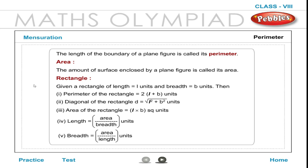For a rectangle with length L units and breadth B units: 1. The perimeter of the rectangle is equal to 2(L + B) units. 2. The diagonal of the rectangle D is equal to √(L² + B²) units. 3. The area of the rectangle is equal to L × B square units.